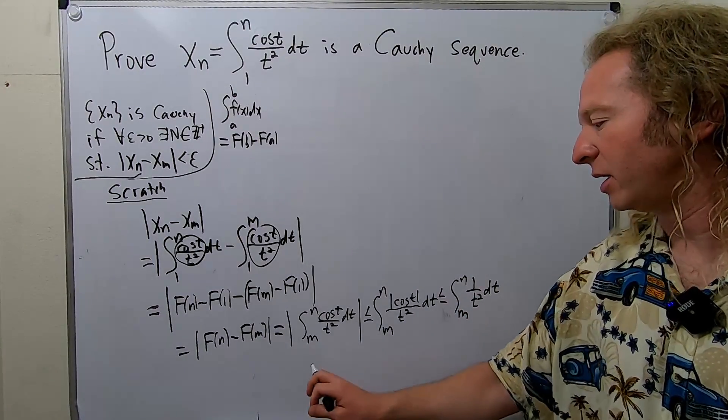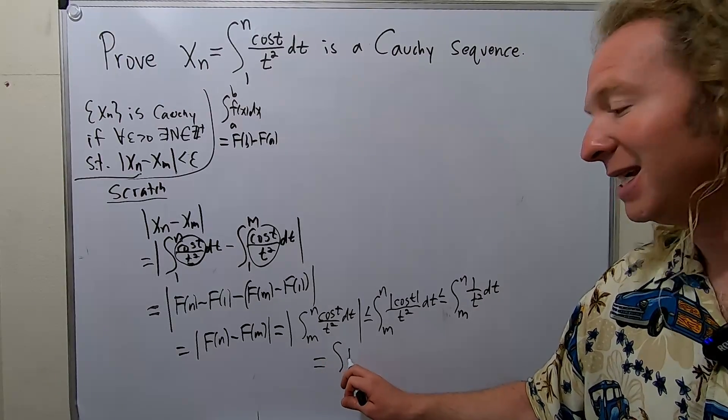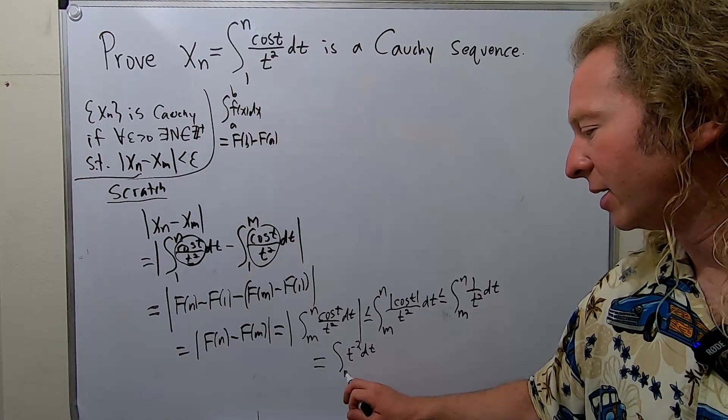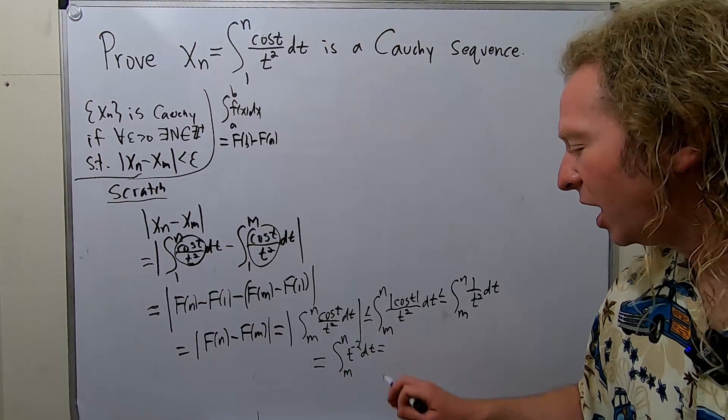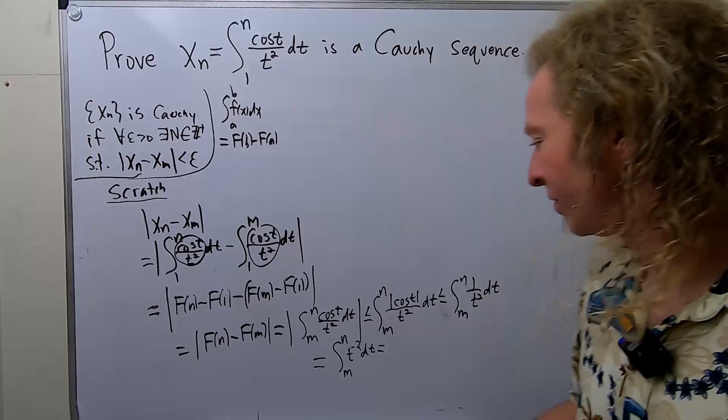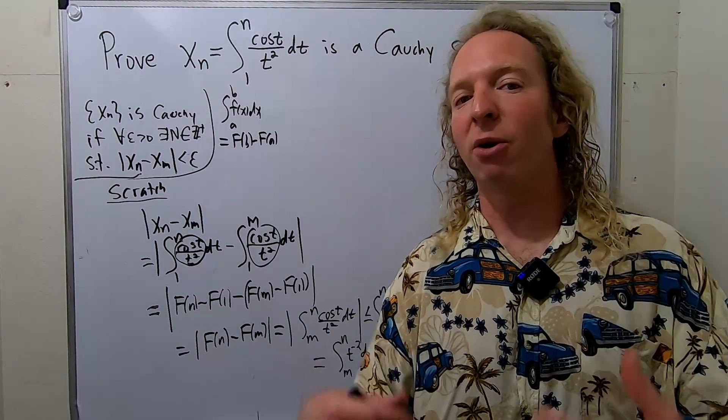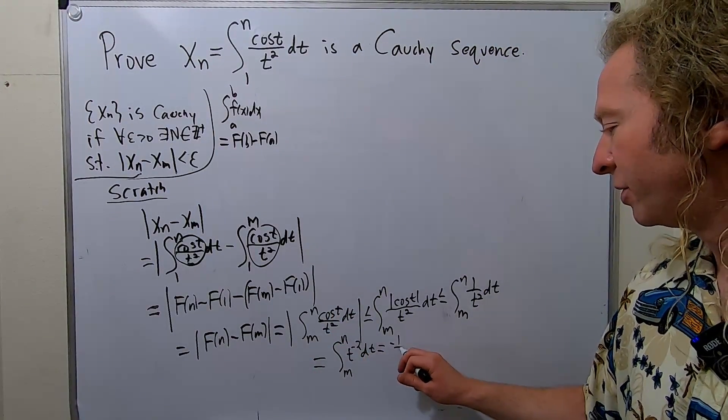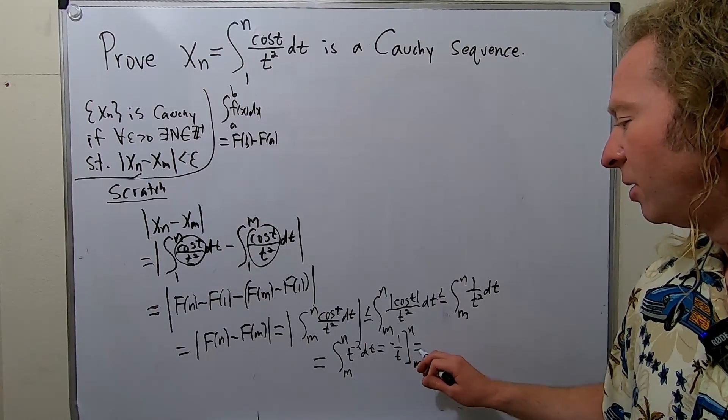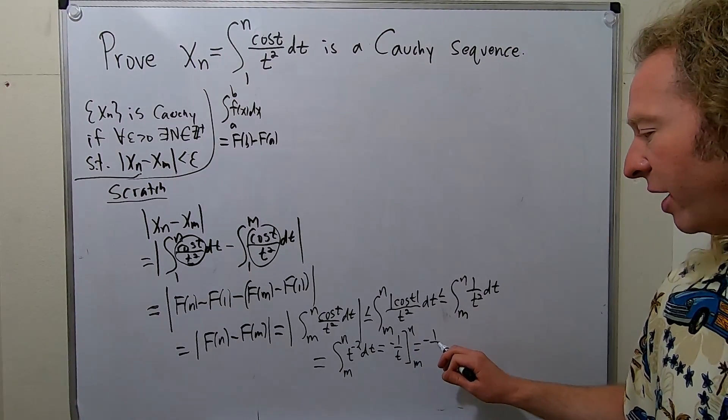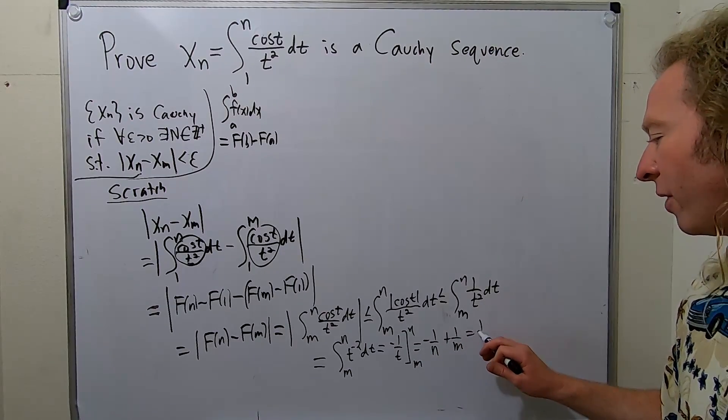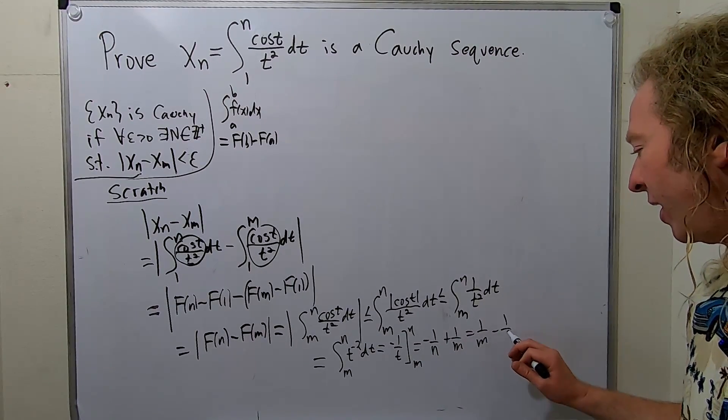We can integrate this by writing it as t^(-2) dt, going from m to n, going kind of fast. Integrating this, we add one. It's t^(-1) over -1. So that's -1/t. This is -1/t. And this is m to n. You plug in the n first, you get -1/n minus, but it's already a minus, so it's plus 1/m. This is 1/m - 1/n.